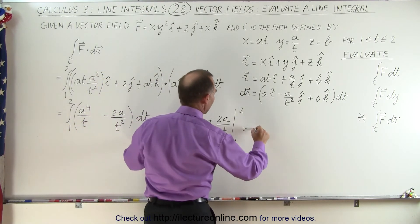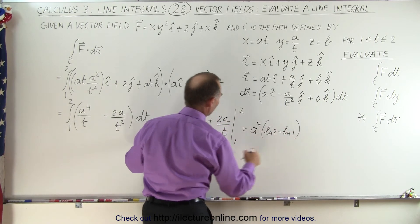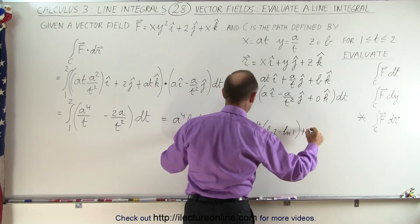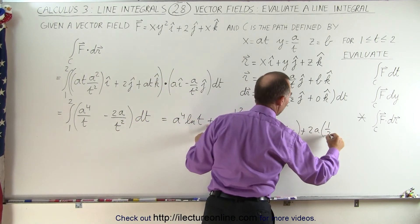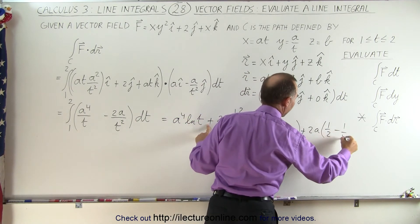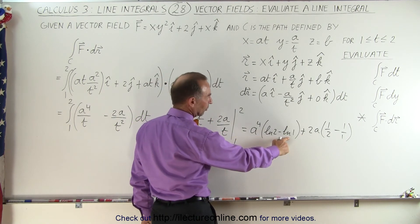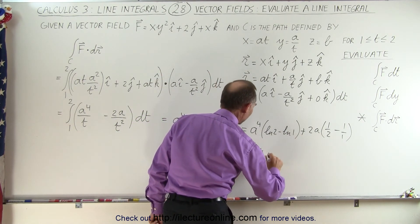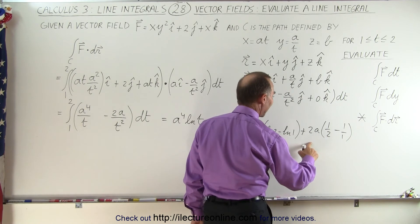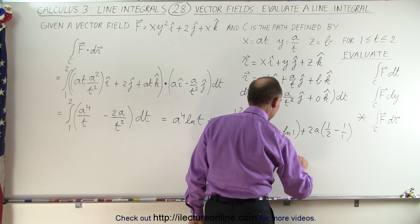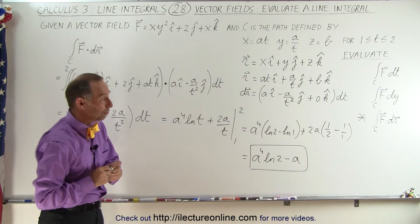Plugging in the upper limit gives a⁴ times the natural log of 2; plugging in the lower limit gives natural log of 1, which equals 0. For the remaining term, the upper limit gives 1/2 and the lower limit gives 1/1. So this becomes a⁴·ln(2), and here we have minus 1 plus one-half, which is minus one-half times 2, giving minus a.